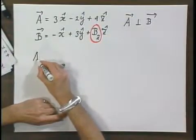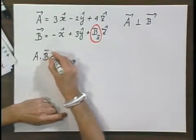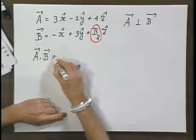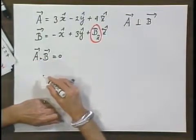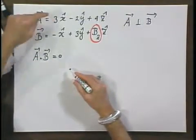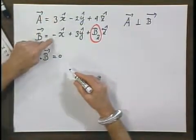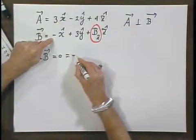What is the dot product? A dot B must be zero. A dot B is the X component of A times the X component of B. That is minus three.